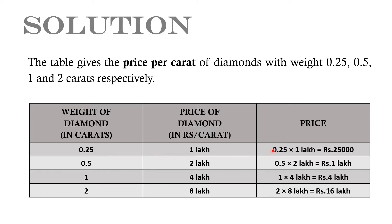Therefore, the price of a 0.25 carat diamond equals 0.25 into 1 lakh, i.e., Rs. 25,000. In the case of a 0.25 carat diamond, the price of the crystal is Rs. 1 lakh.